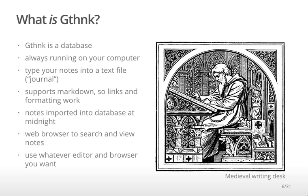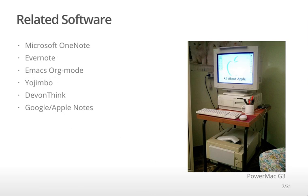Use whatever editor you want to actually create the notes in the first place. Some software in the same ballpark as GThink includes Microsoft OneNote, Evernote, Emacs Org Mode, Yojimbo, DevonThink, Google, and Apple Notes, and dozens if not hundreds of other types of software organized around the idea of note tracking or journaling.